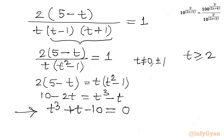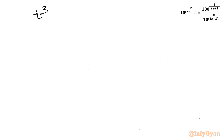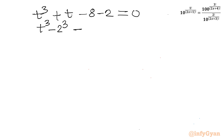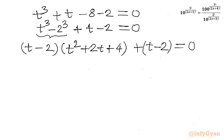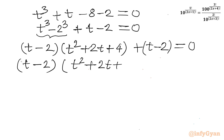Let us solve this cubic equation by factorization. We rewrite t³ - 10 as t³ - 8 - 2, noting that 8 = 2³. So t³ - 8 + t - 2 = (t³ - 2³) + (t - 2). Applying the difference of cubes formula a³ - b³ = (a-b)(a²+ab+b²), we get (t-2)(t²+2t+4) + (t-2). Factoring out (t-2): (t-2)(t²+2t+4+1) = (t-2)(t²+2t+5) = 0.